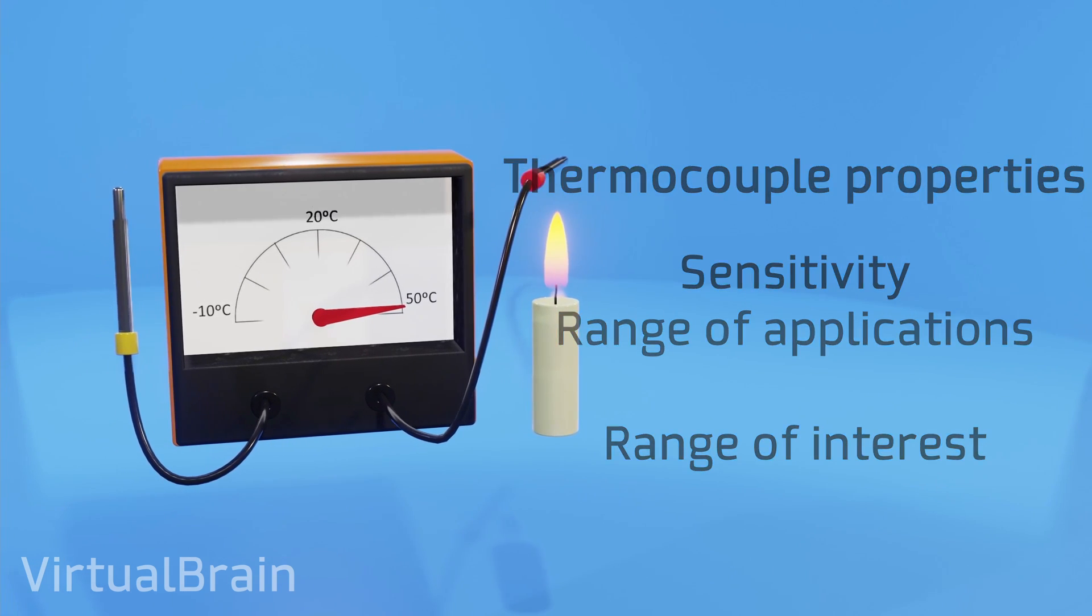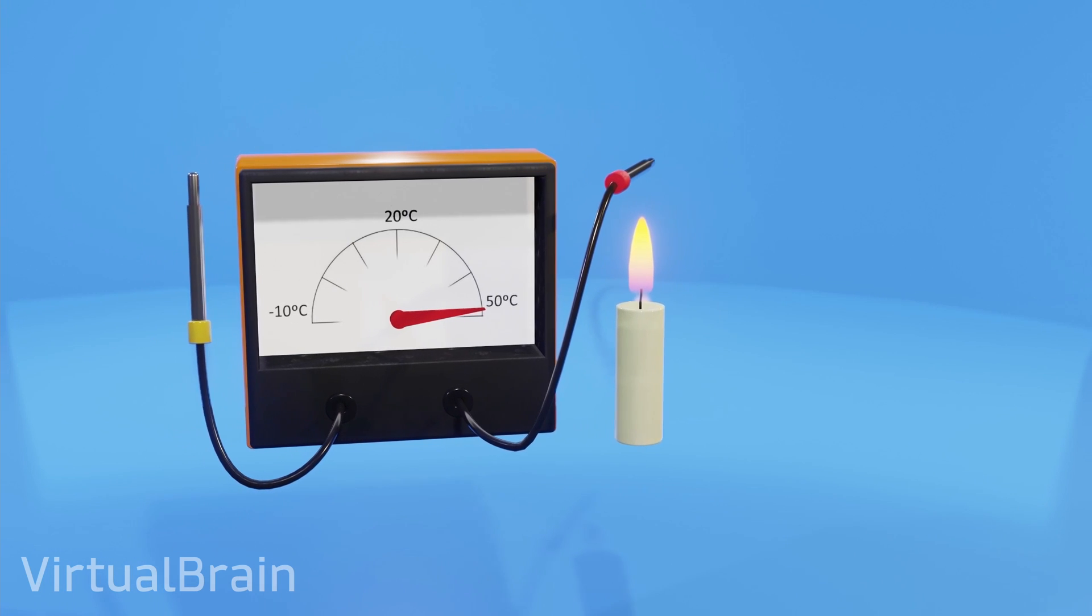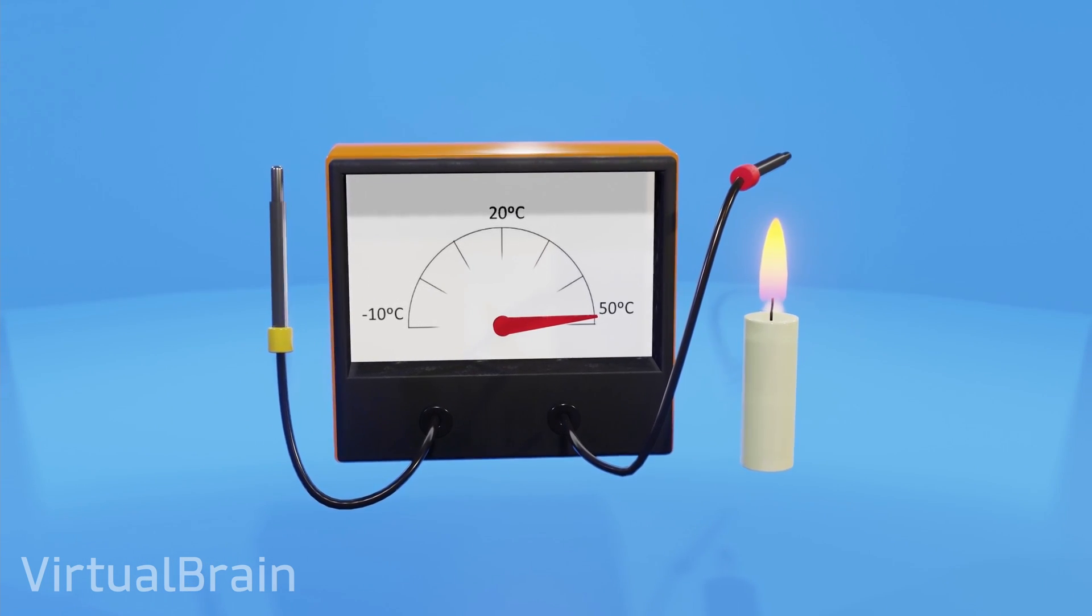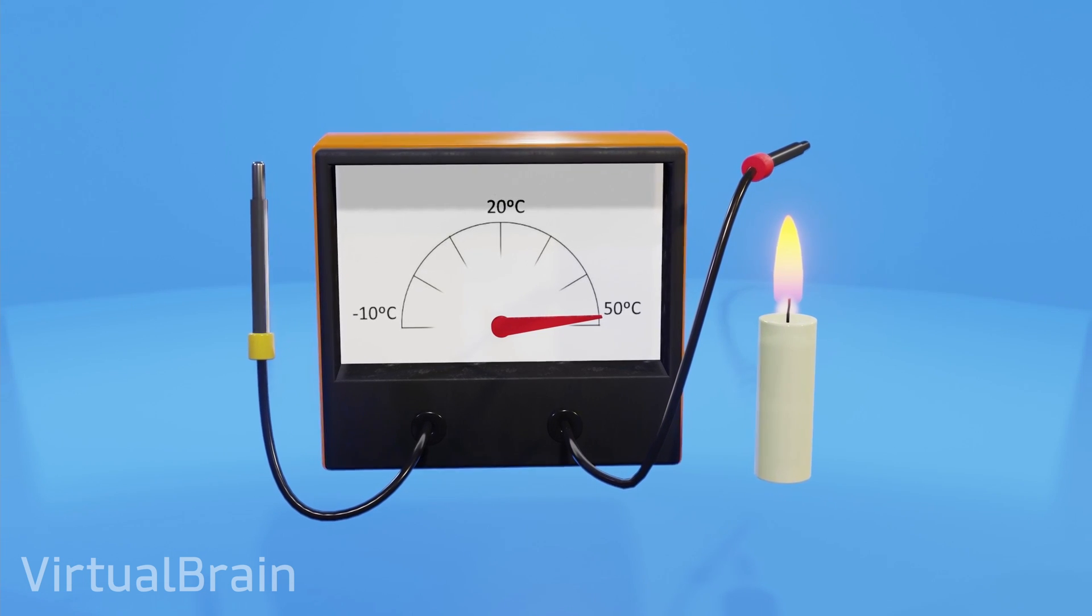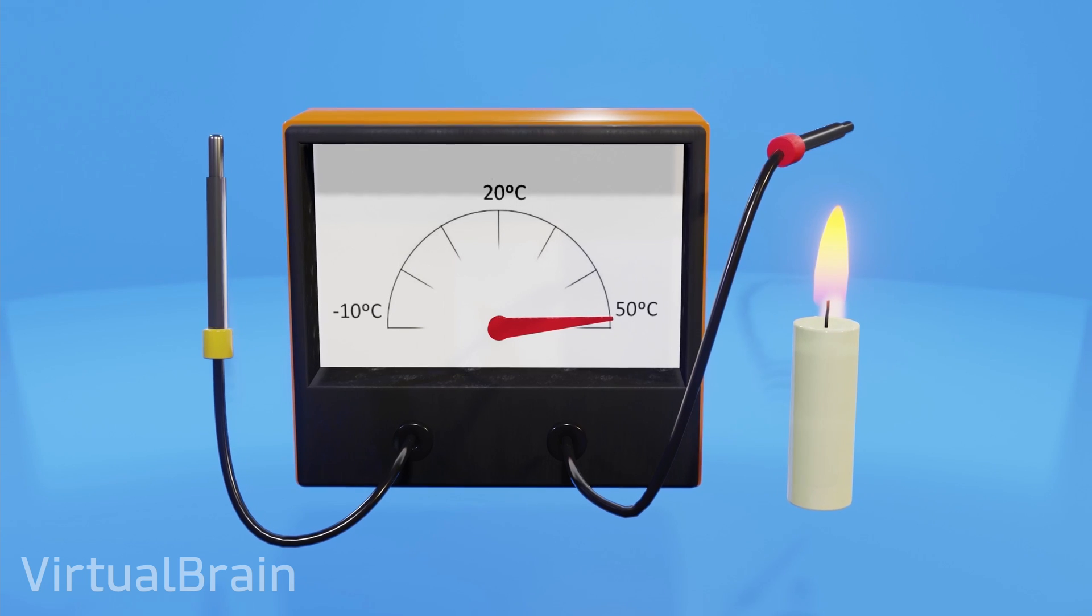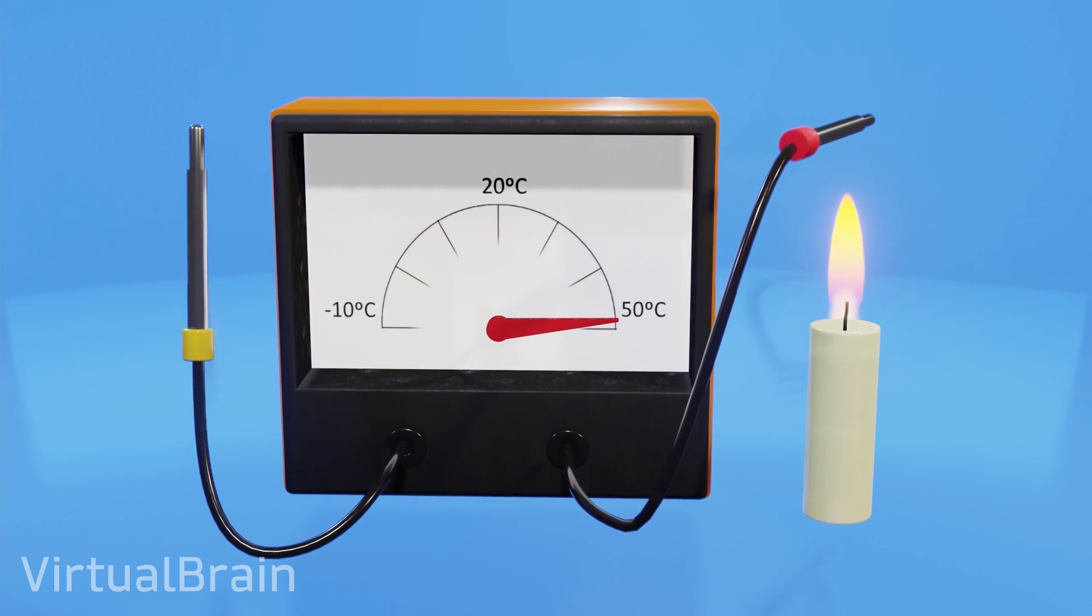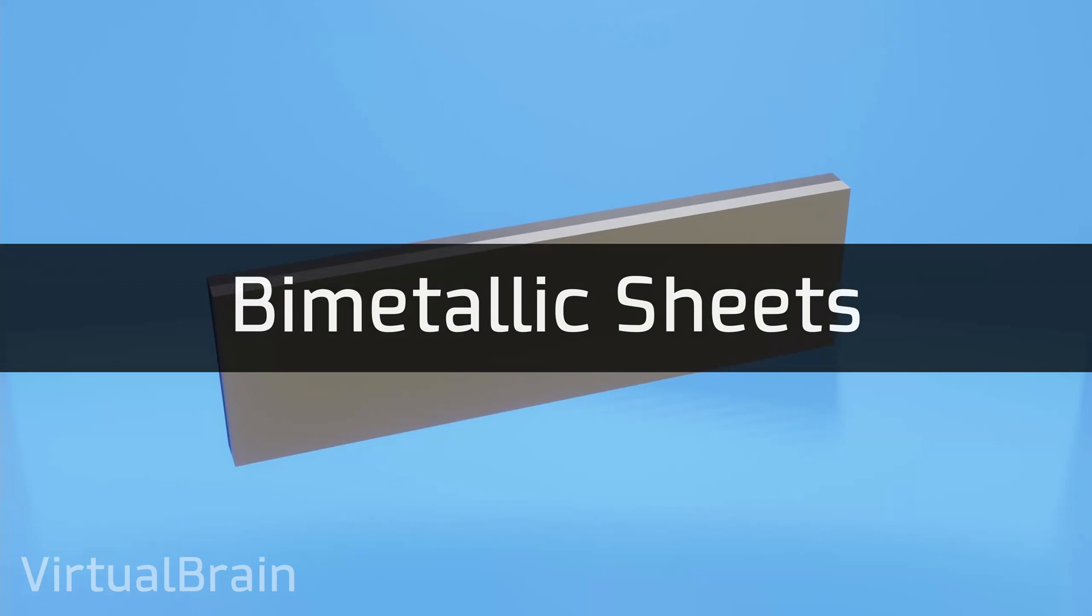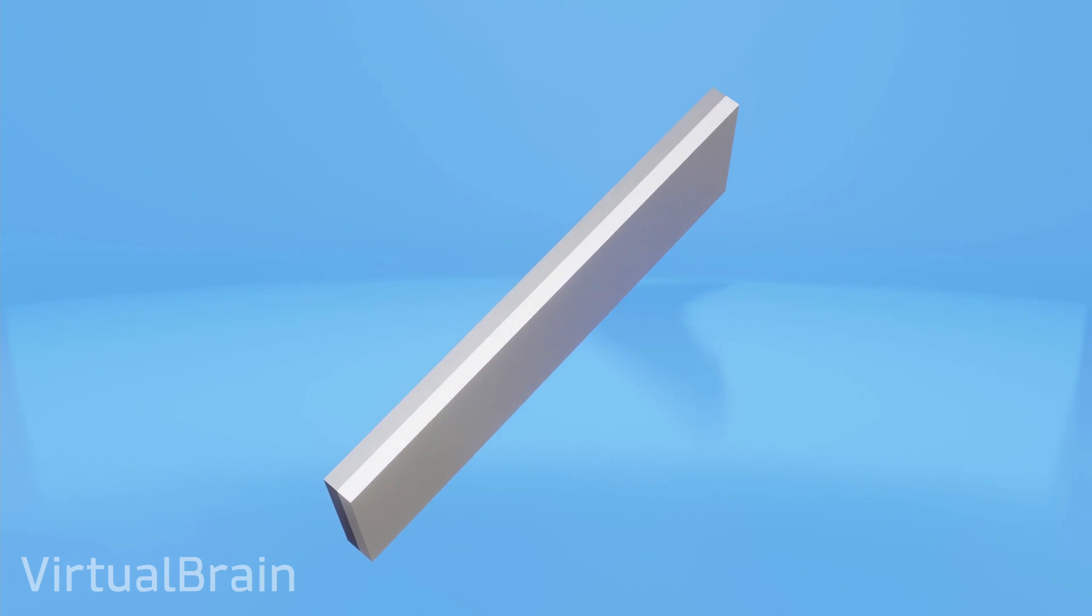Now, before moving on to talk about the Peltier effect and Peltier cells, I want to make a small digression about another device for measuring temperature that is also composed of a couple of different metals but works in a completely different way, and that's why I don't want you to confuse them. I'm talking about bimetallic foils.